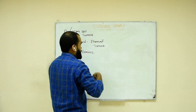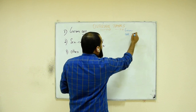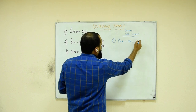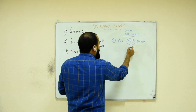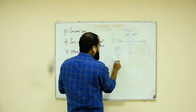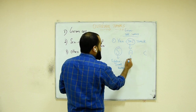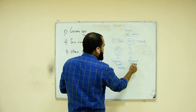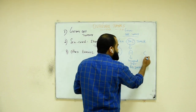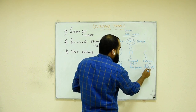Starting with germ cell tumors. The first important one is the yolk sac tumor. Using the mnemonic SAC: S is for Schiller-Duval bodies, A is for increased alpha-fetoprotein, and C is for children — both boys and girls are affected. In boys, the affection will be in the testis.